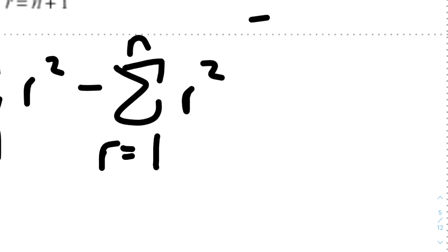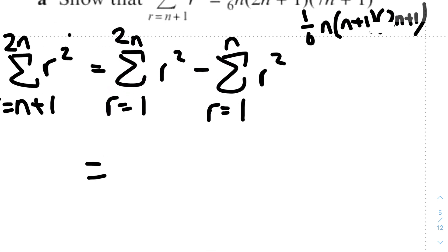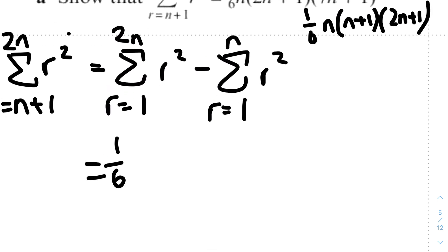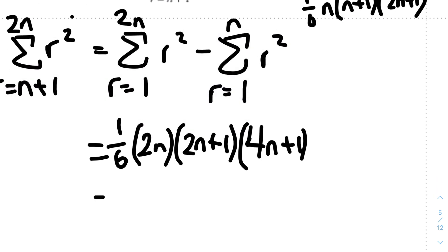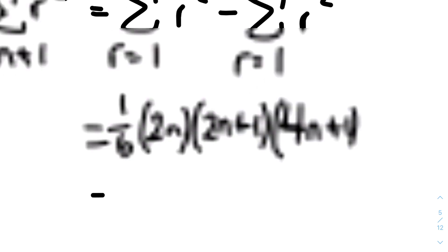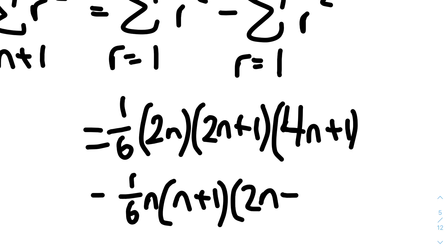Let's evaluate this. The sum of r squared equals one-sixth n(n+1)(2n+1). So the first term becomes one-sixth times 2n times (2n+1) times (4n+1), since when n is replaced by 2n we get 2(2n)+1 = 4n+1. Minus the second term: one-sixth times n times (n+1) times (2n+1).